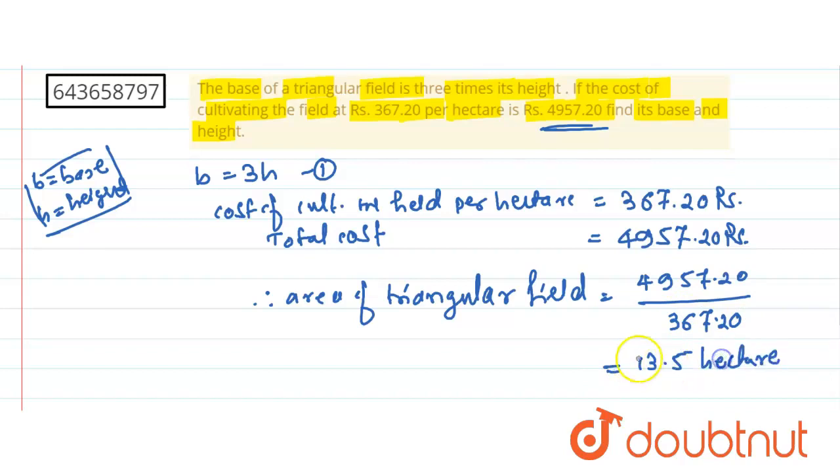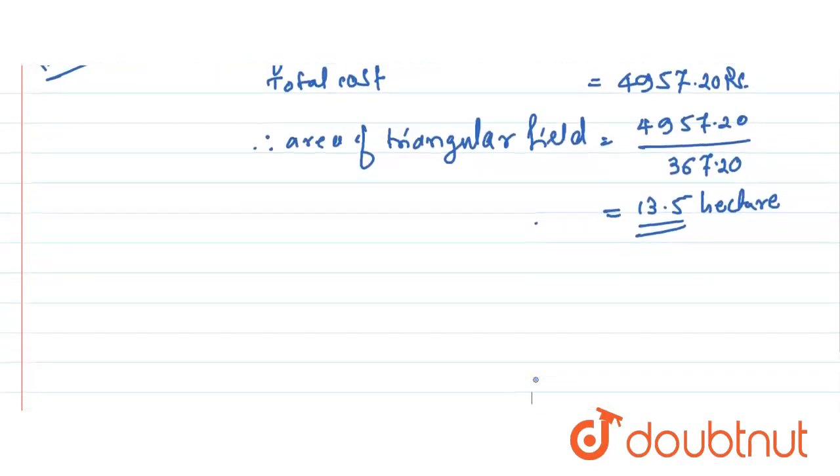So the area of this triangular field is 13.5 hectare. If we convert this in meter square, area is 135000 meter square.